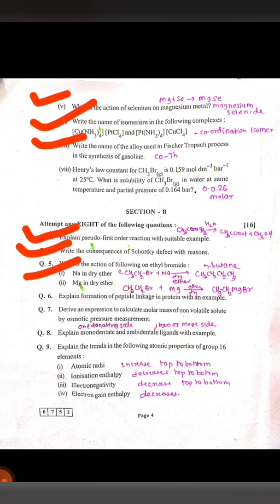Peptide linkage we have to explain, that is amide linkage in this compound formed by the dehydration, intermolecular dehydration of the reaction. Expression we have to determine in the seventh question. Monodentate means one donating site. Ambidentate means two or more than two donating sites. Example: NO2, that is NO2 or ONO.